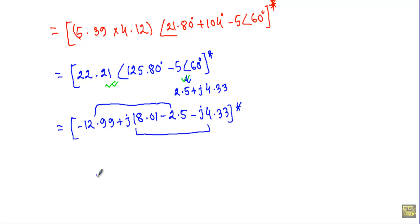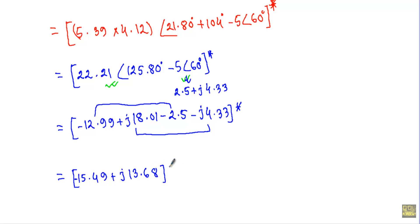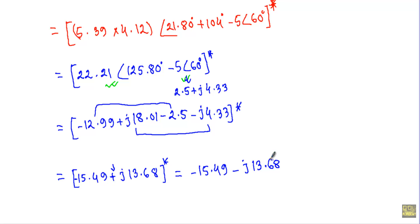Adding the real parts and imaginary parts: the real part gives minus 15.49 and the imaginary part gives plus J13.68, with the conjugate sign on top. This is our simplified result. Now to get the actual result I take the conjugate — since the imaginary part has a positive sign, I change it to minus: the final answer is minus 15.49 minus J13.68, expressed in rectangular form.